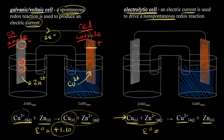Since we reversed the reaction, we just change the sign, so the standard cell potential would be negative 1.10 volts. A negative value means a non-spontaneous redox reaction — this doesn't occur on its own. Solid copper doesn't just turn into copper two-plus, and zinc two-plus doesn't turn into solid zinc without help. It needs an external voltage source, like a battery, to drive this reaction and force it to happen.